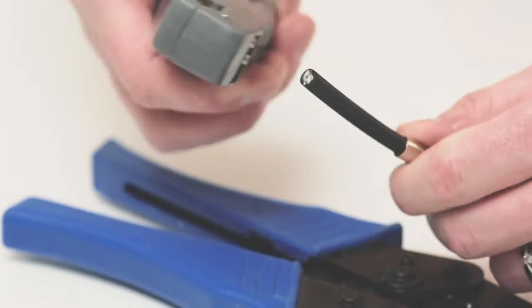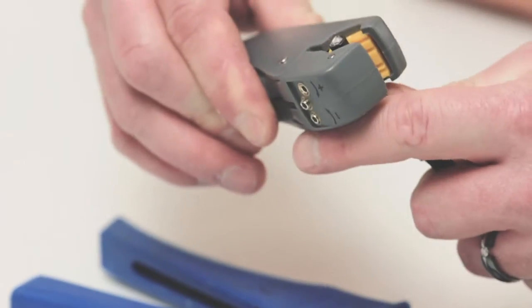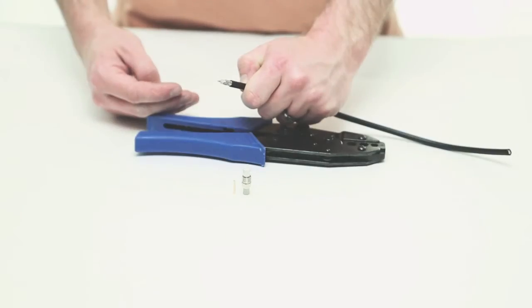Then take your coax stripping tool and remove the jacket and dielectric. The advantage of using a coax strip tool allows you to remove both in one motion.